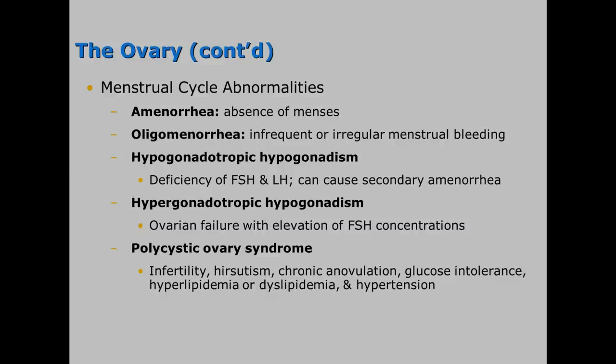There are abnormalities within the menstrual cycle. Amenorrhea means absence of menses. Oligomenorrhea is infrequent or irregular menstrual bleeding. Hypogonadotropic hypogonadism is a deficiency of FSH and LH, which can cause amenorrhea — something we may test for in the laboratory. Hypergonadotropic hypogonadism is ovarian failure, but with elevated FSH.